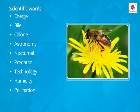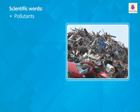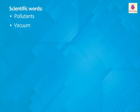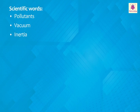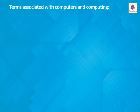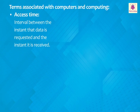Pollination is the process of transference of pollen to the stigma of flowers. Pollutants are harmful fumes, waste chemicals, and rubbish that make the environment dirty. A vacuum is a completely empty space with no solids, liquids, or gases inside it. Inertia is the property of matter by which it resists change in its state of rest.